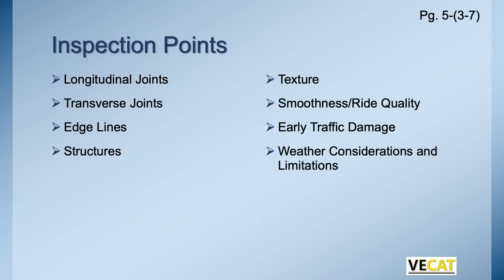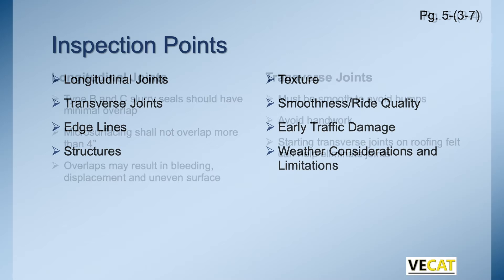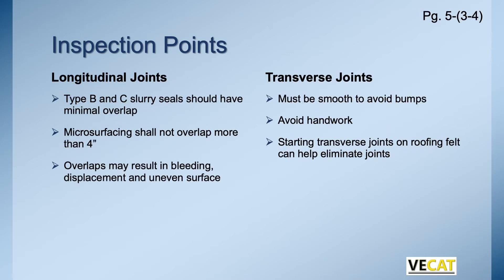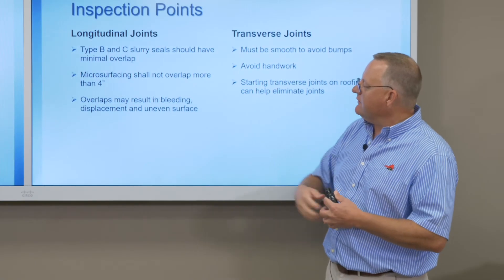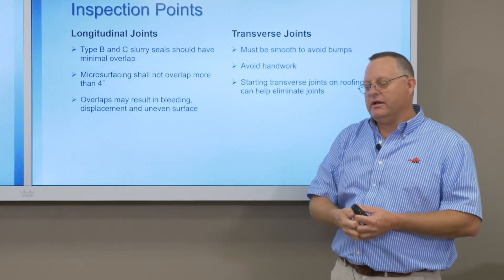Let's talk about what we're inspecting — what to look for to ensure a good quality product. We're going to cover joints, lines, structures, texture, and weather considerations. For joints, we should have minimal overlap. Type B and Type C slurries have larger aggregates, so more overlap will create more of a ridge or hump. We want minimal overlap on slurry seals. For microsurfacing, no more than four inches — we don't want excessive overlap at the longitudinal joints.